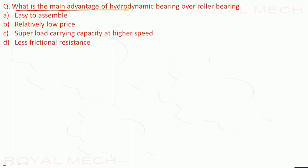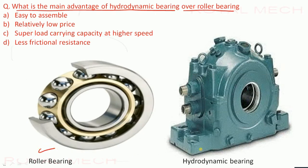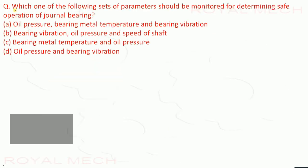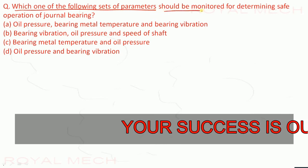What is the main advantage of hydrodynamic bearing over roller bearing? The given options are easy to assemble, relatively low price, and superior load carrying capacity at higher speed. The superior load carrying capacity at higher speed is the main advantage of hydrodynamic bearing over roller bearing, because roller bearings cannot carry heavy loads. Option C is the correct option.